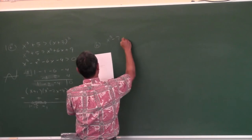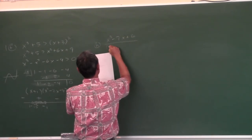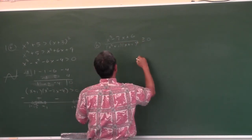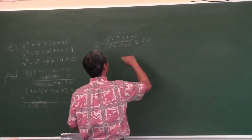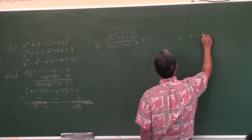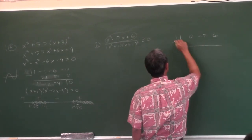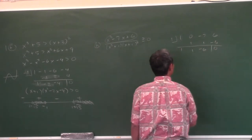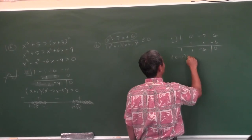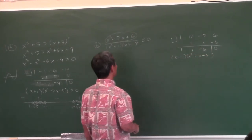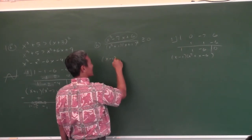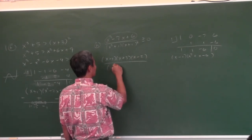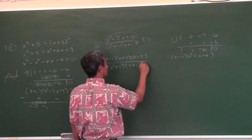And then problem h: x cubed minus... this looks like another synthetic division. Let's do it: 1, 0, negative 7, 6. This one, 1 works. So that factors as (x minus 1)(x squared plus x minus 6). The numerator is going to be (x minus 1)(x plus 3)(x minus 2). And the denominator is going to be (x squared plus 1)(x plus 1) squared.